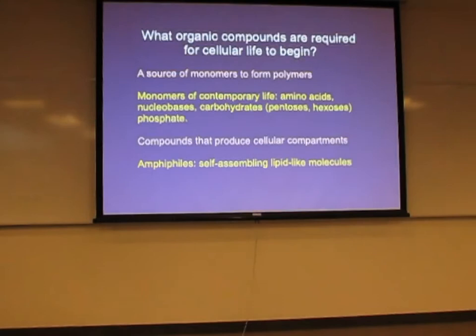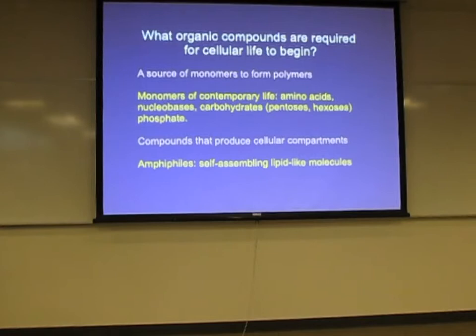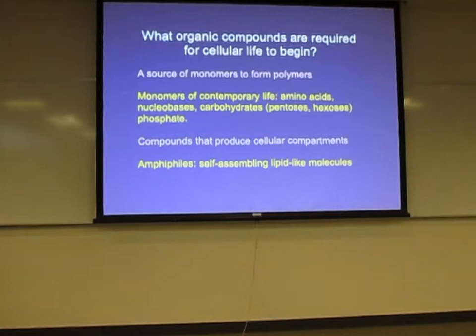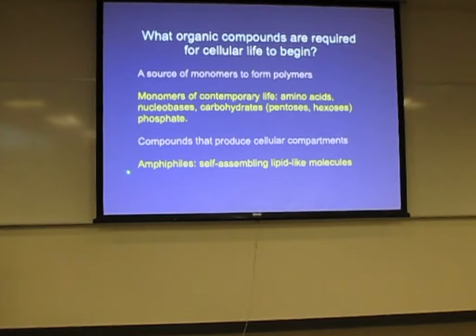What organic compounds do we need to start up life? We've got to have monomers — things like amino acids that you can link together into a polymer, like a protein. You also have to have nucleobases: adenine, guanine, cytosine, and uracil, which life uses today for ribonucleic acid. If you change uracil to thymine, that's DNA. Then you need carbohydrates to link them together, phosphate — very important — and compounds that produce cellular compartments, which is where soap bubbles come in.